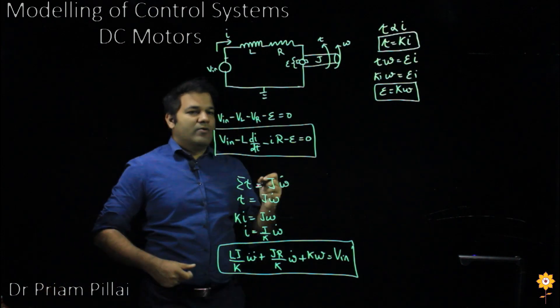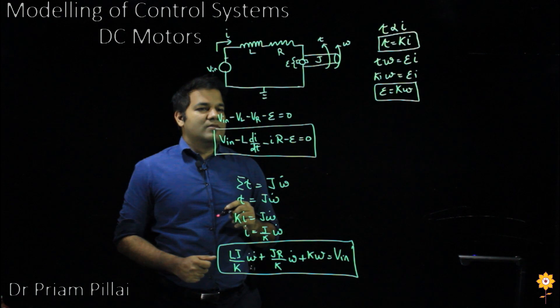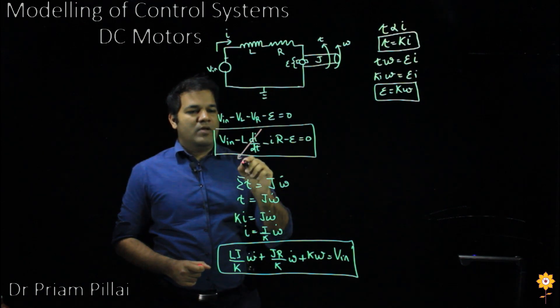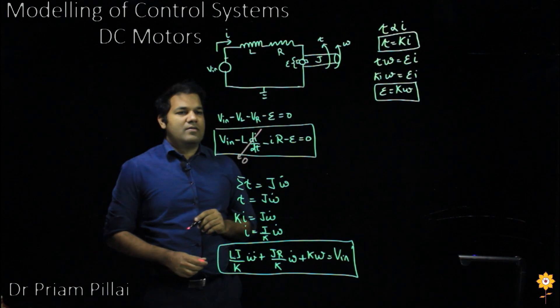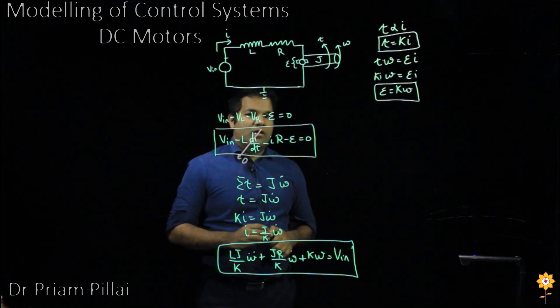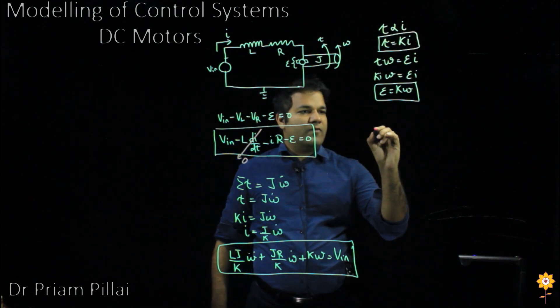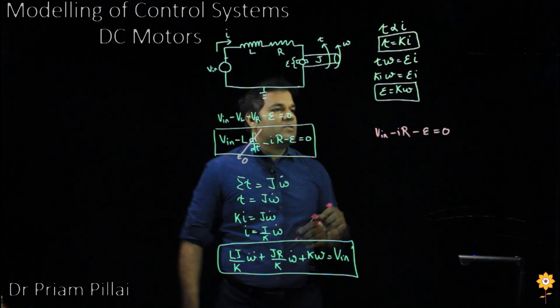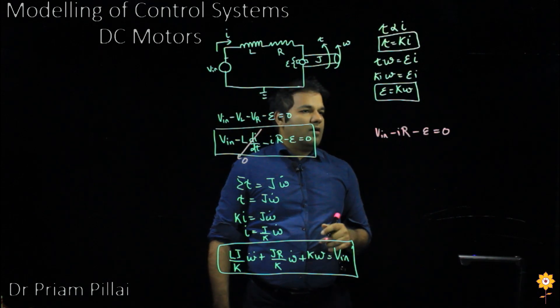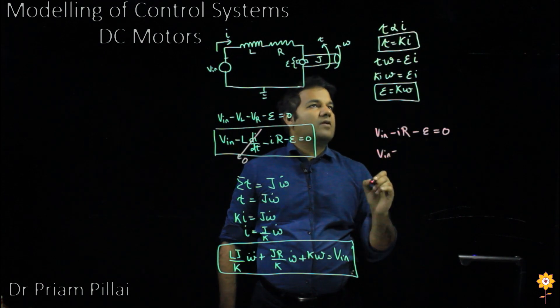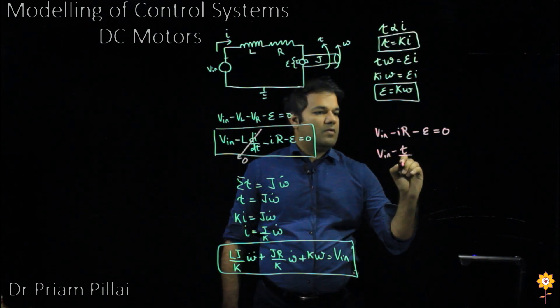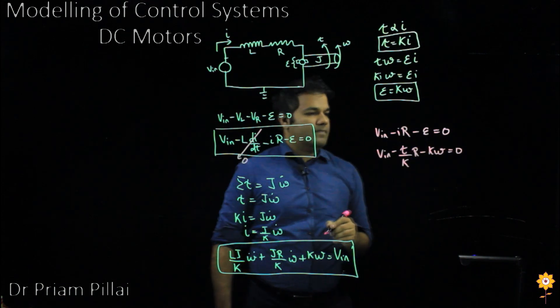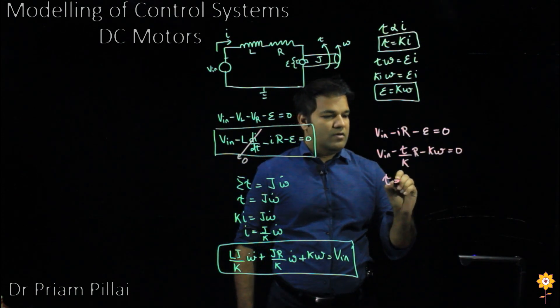Another thing that we should think about is that in most cases, the inductor has a very low impedance as compared to the resistance of the coil. So we could probably assume that the inductance is negligible. If we do that, we can write the following expression. And then substituting for the current and the back EMF, and then solving for the torque, we end up getting this.